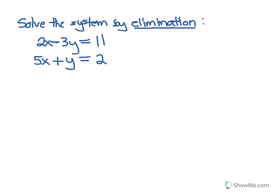Hi everyone. Here we're asked to solve the system of equations — this is the whole system, so it's these two equations. There's an x variable and a y variable in each equation. So as long as we have two equations and two unknowns, the same number of variables as equations, we can solve for them both.